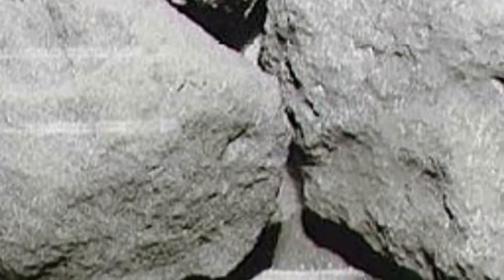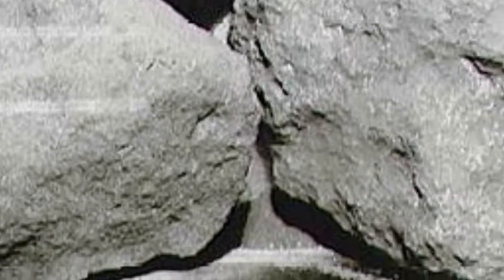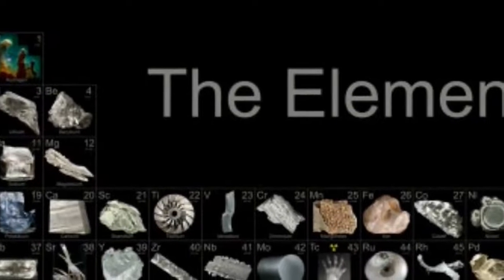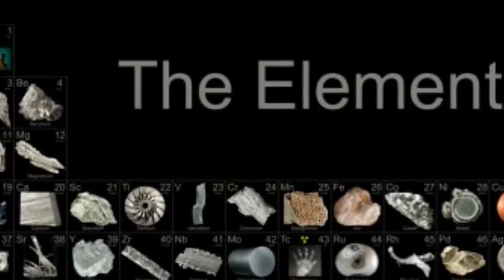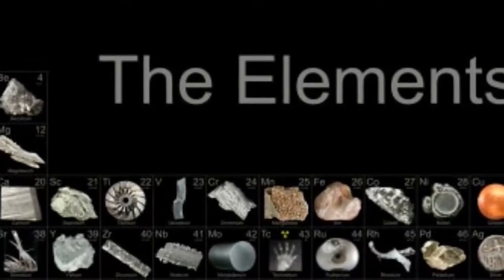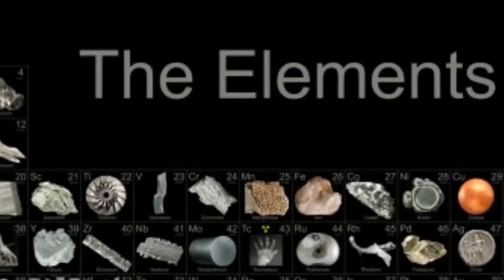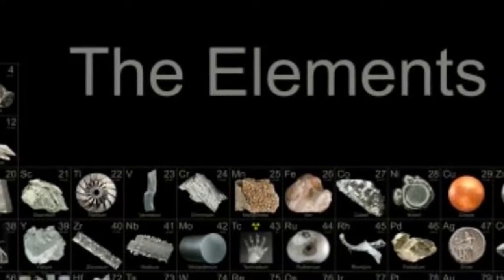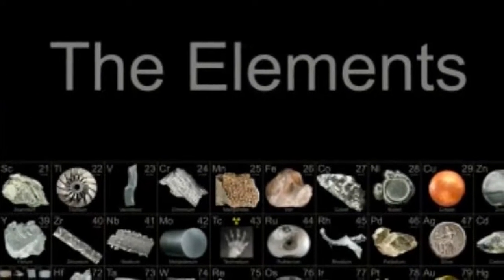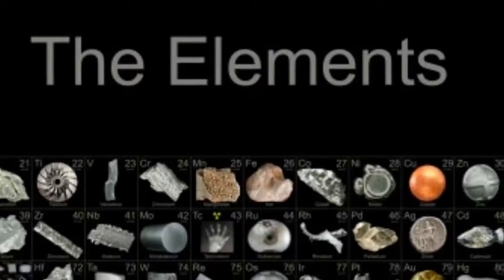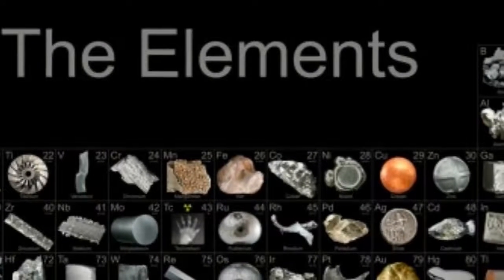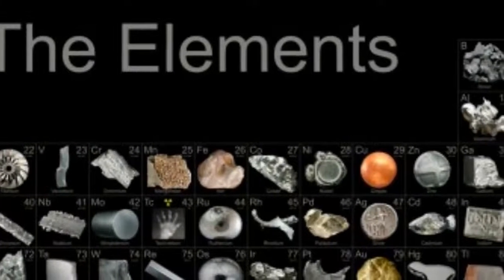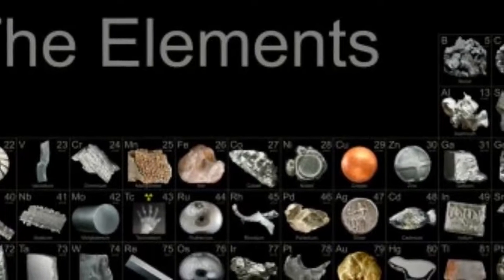The earth itself is said to be 4 billion 600 million years old. Elements such as uranium-236 and neptunium-237 were discovered in lunar rocks and are not found naturally on earth. This fact, and the age of lunar rocks, disprove the fission, impact, and condensation theory.